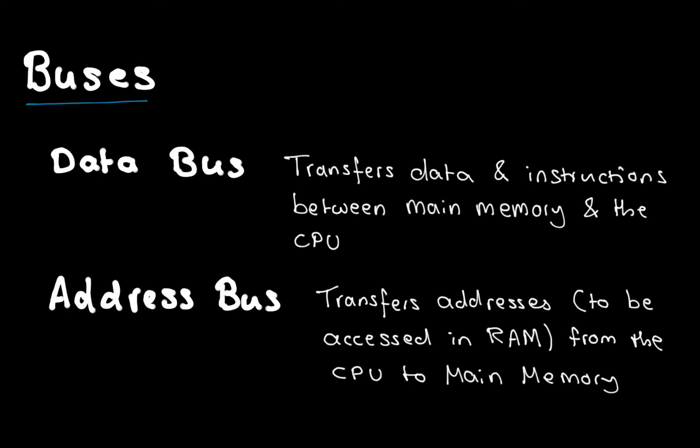If you were paying attention last lesson, you might remember I mentioned the control bus. That's not so relevant here — the control bus sends control signals, timing signals, and so on. I haven't covered it on these slides because it's not directly relevant to the von Neumann architecture and the fetch-execute cycle, which we're about to do.